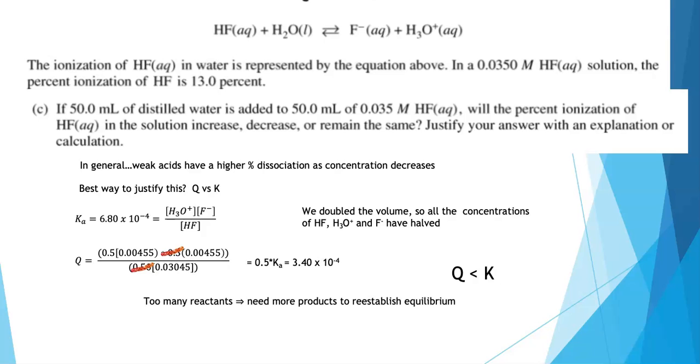Therefore, the percent ionization is going to go up because I have to shift right to make more hydronium ion and make more fluoride ion. My percent ionization increases and that's what I needed to say really to earn this point. Kind of a long, convoluted approach, but it works and it's correct. And I can earn the full point here.